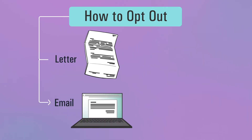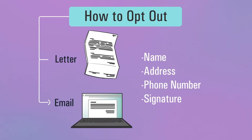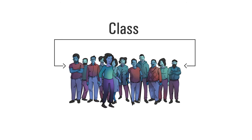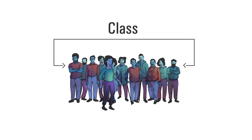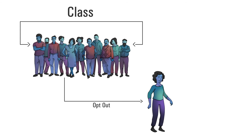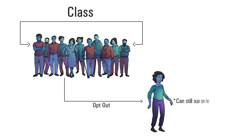The letter should include her name, address, telephone number, and signature. By opting out, Anita would be removing herself from the results of the class action. If the class action is successful, Anita cannot receive any money or benefits awarded to the class members. By opting out, she could still sue the defendant on her own.